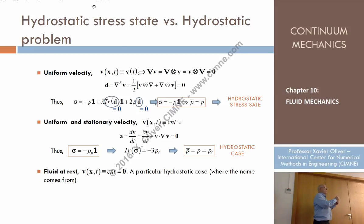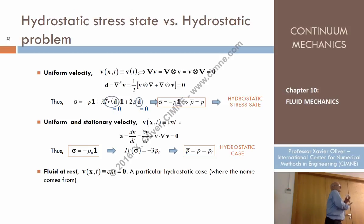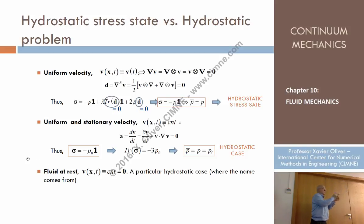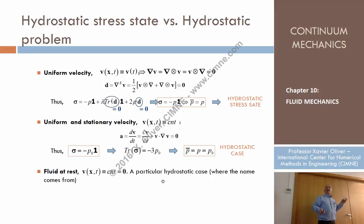For instance, imagine a container with some water inside. Velocity is zero with respect to the Earth's reference system, but the Earth is moving with respect to the Sun, and the Sun with respect to the galaxy. So what 'no velocity' means depends on the reference system — we are talking about constant velocity, not zero velocity. An object filled with water moving at constant velocity is also considered hydrostatics.